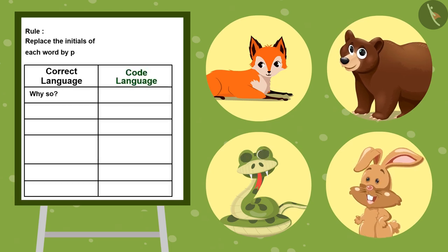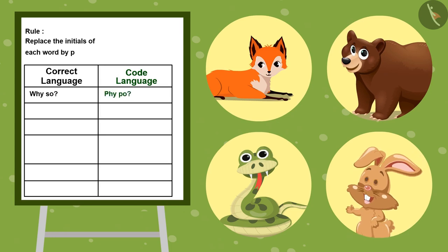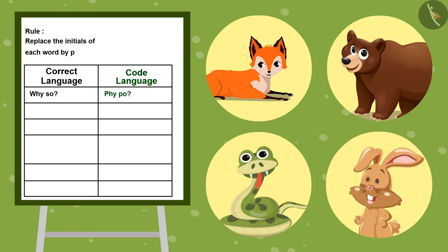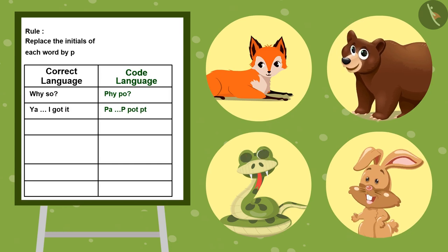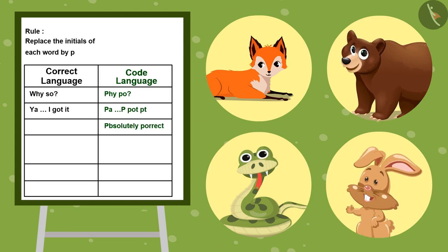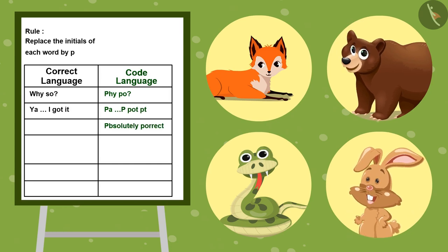Why so? Pipe Po. Pipe Po. Yeah, I got it. Pia. Pipe Potpit. Absolutely correct. Kids, you can pause the video to translate the words and try to talk in this language.